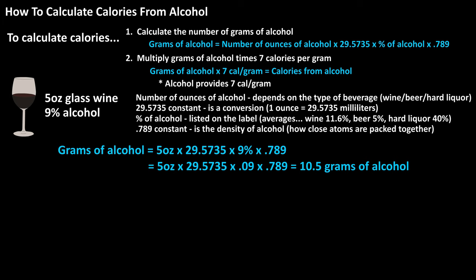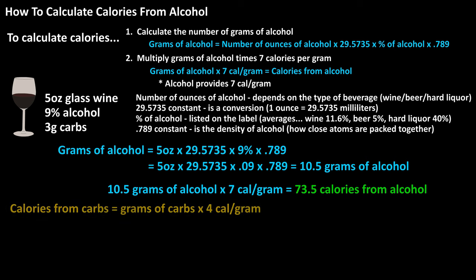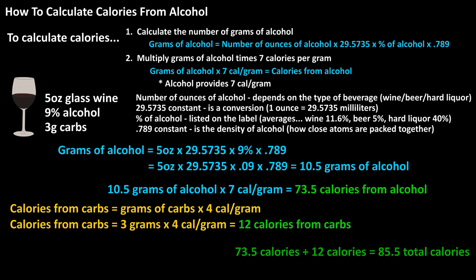Next, we take the result of 10.5 grams and multiply it by 7 calories per gram, which equals 73.5 calories from alcohol for this glass of wine. This is calories from alcohol only. Most wines do contain a small amount of carbohydrates, so let's say this wine contained 3 grams of carbohydrates and no protein or fat. Carbohydrates provide 4 calories per gram, so 3 times 4 equals 12 calories from carbs. Adding 73.5 plus 12 gives us 85.5 total calories for this glass of wine.